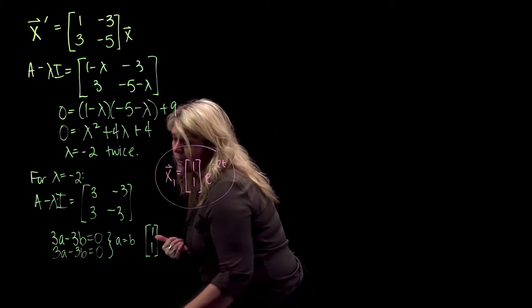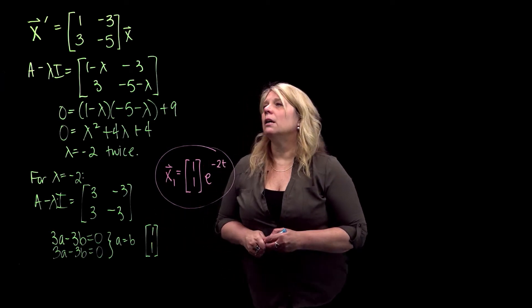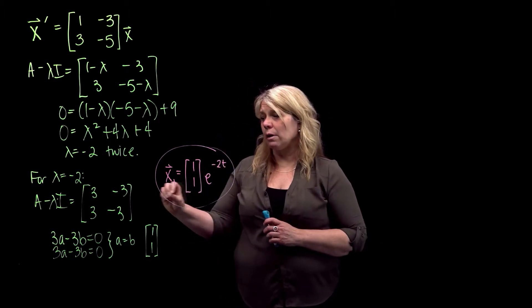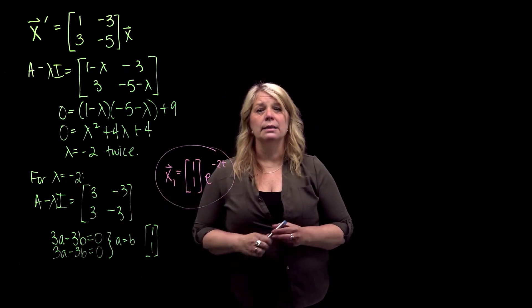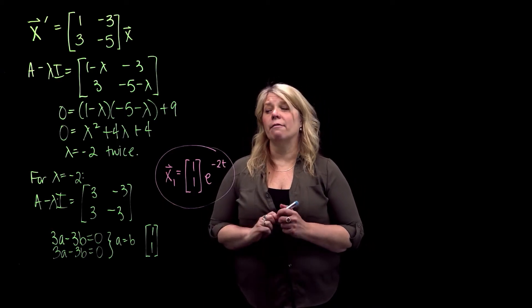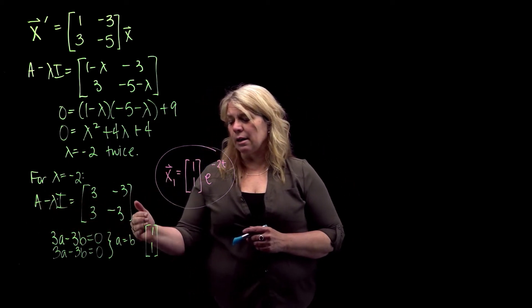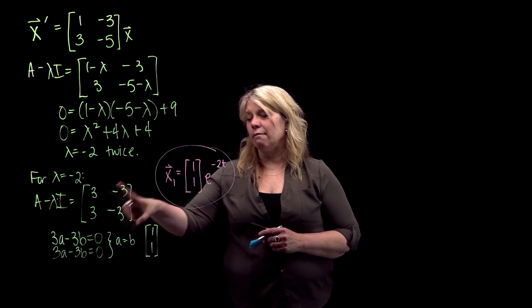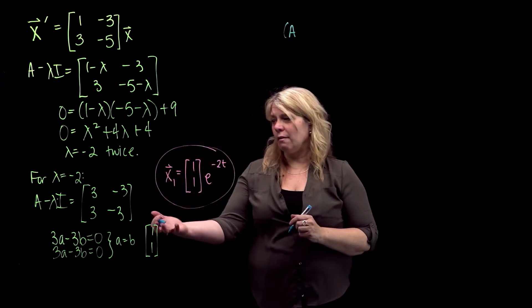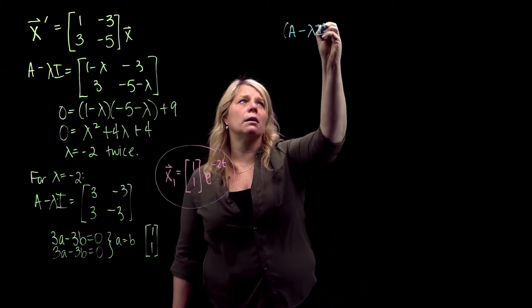There's an expression in your notes about generalized eigenvectors for building solutions. We're going to follow that same process — we went through one example in class, and here's another one. We're going to start by looking at powers of A minus lambda I and choosing vectors in the null space of that matrix. So we already have A minus lambda I to the first power, and now I'm going to look at A minus lambda I squared.